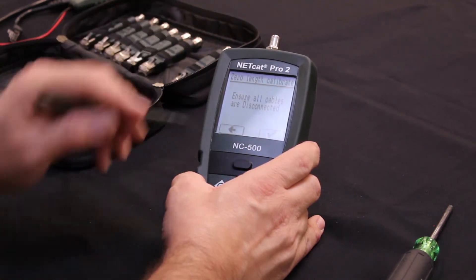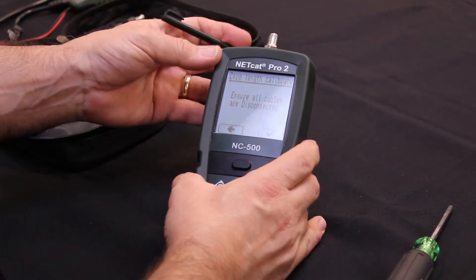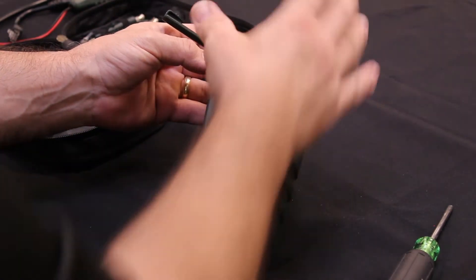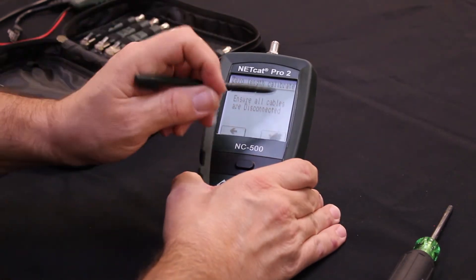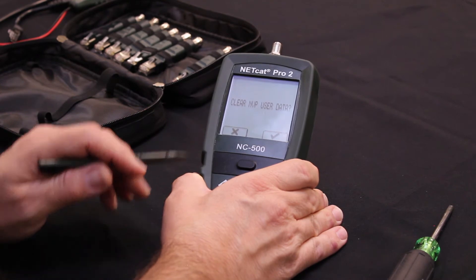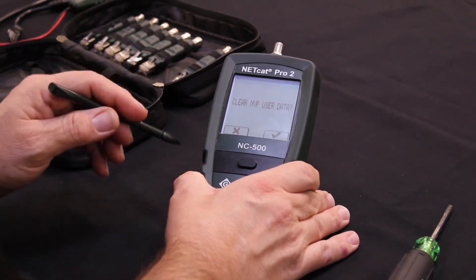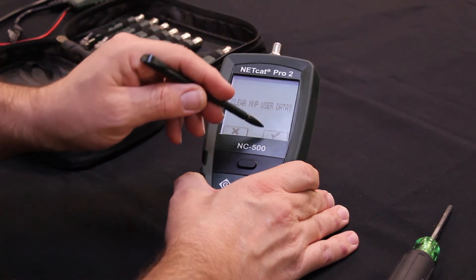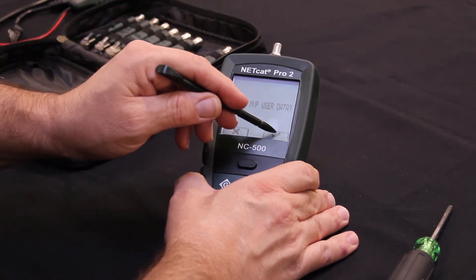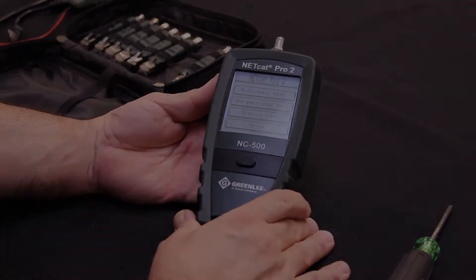Now, the unit needs to go through a zero length calibration. Make sure there's no cables connected to the unit, either at the bottom or at the top, and press the check mark. Next, you would clear the NVP user data at first initial startup. You want to select the check mark and clear any data that's in the unit. The unit is now ready to use for test.